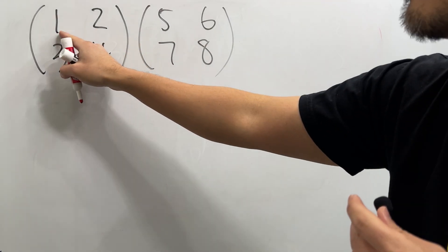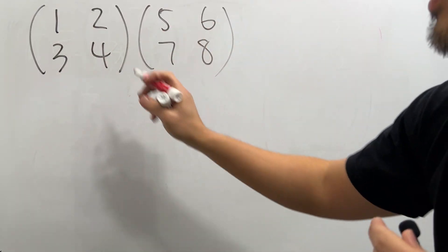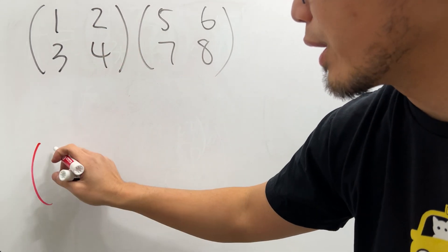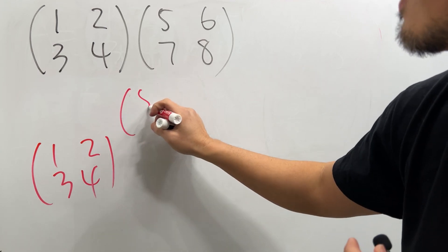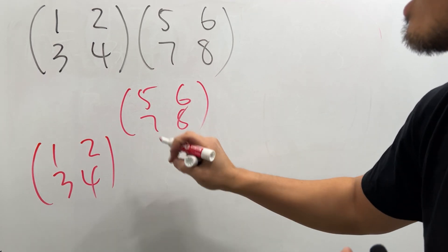How do you multiply these two matrices? Well, we have 1, 2, 3, 4 and 5, 6, 7, 8. All right, check this out. I'm going to move this down right here: 1, 2, 3, 4. And then for this right here, I'll put it here so we have 5, 6, 7, 8.